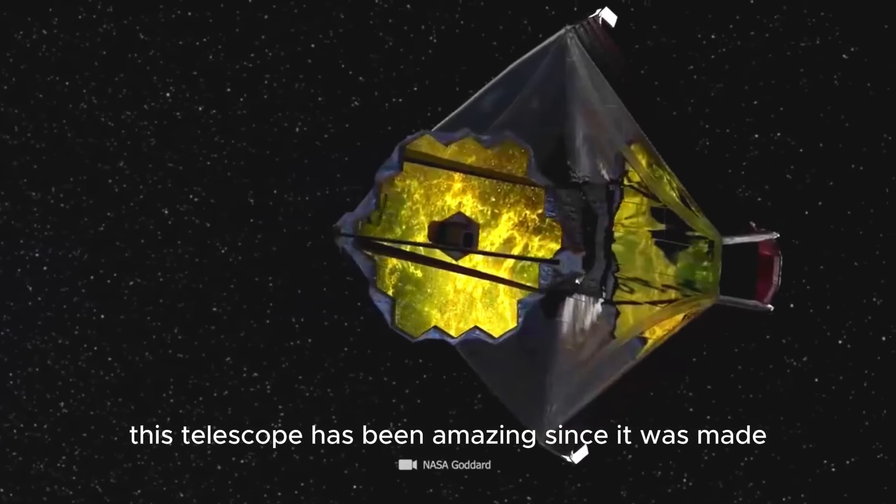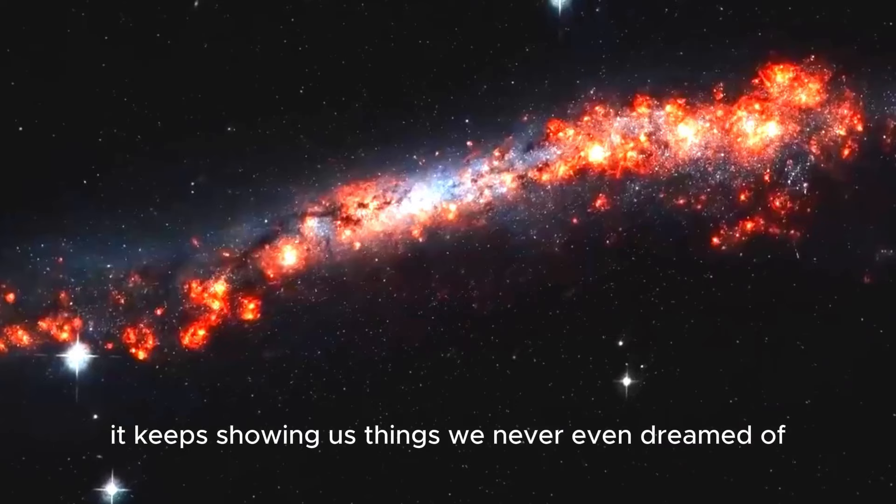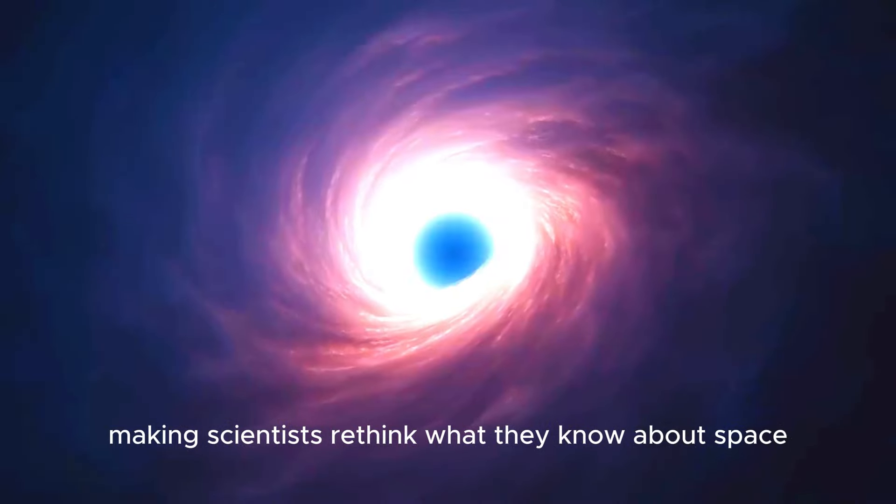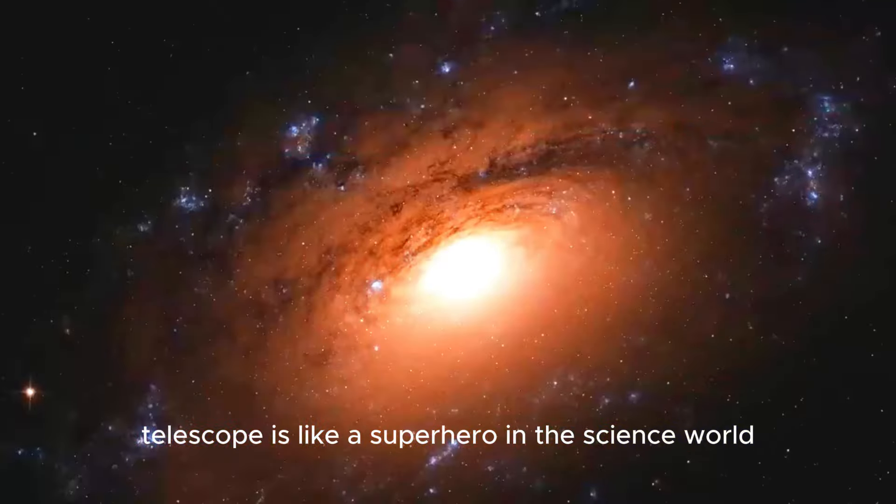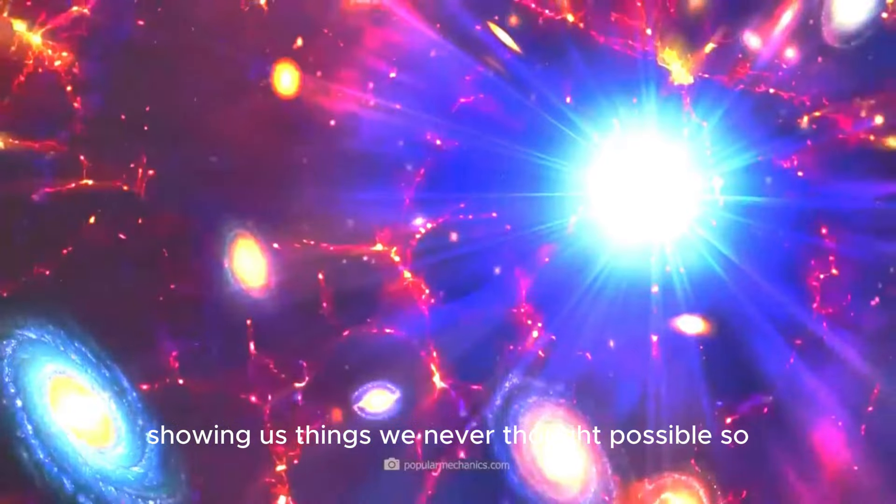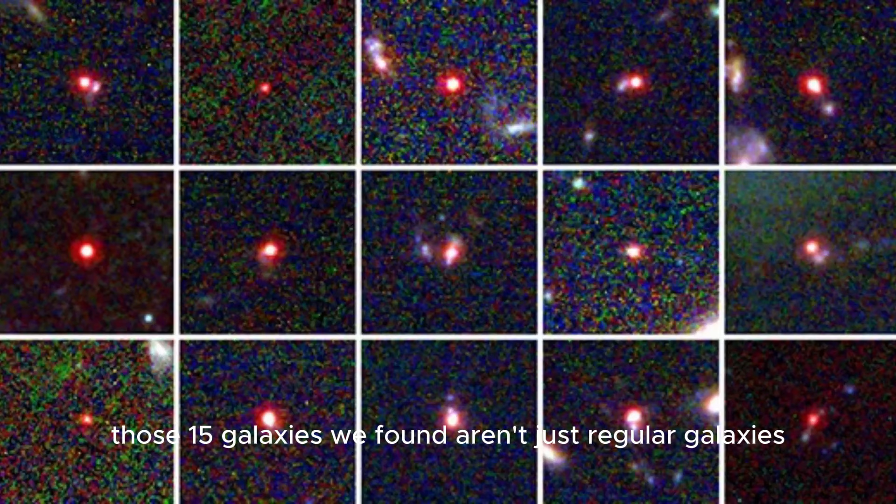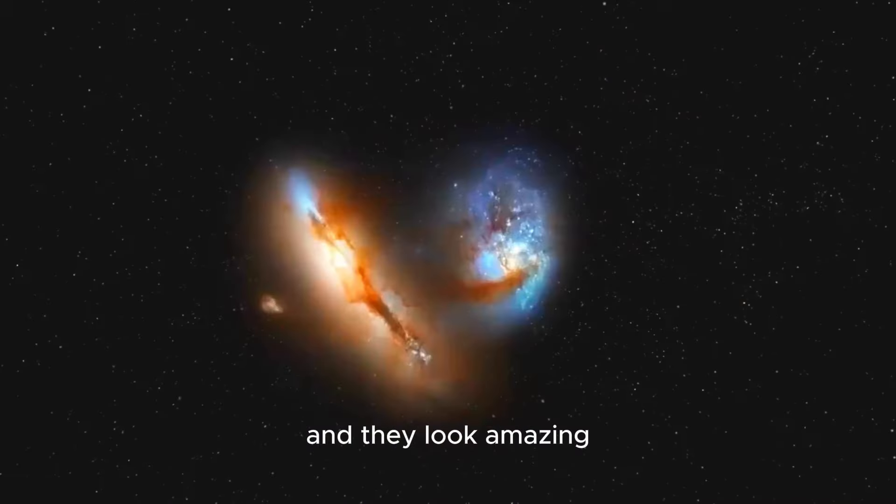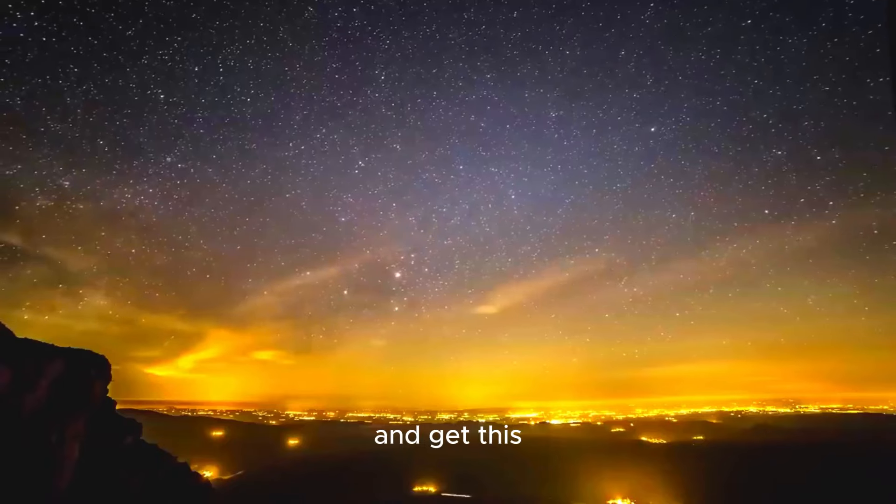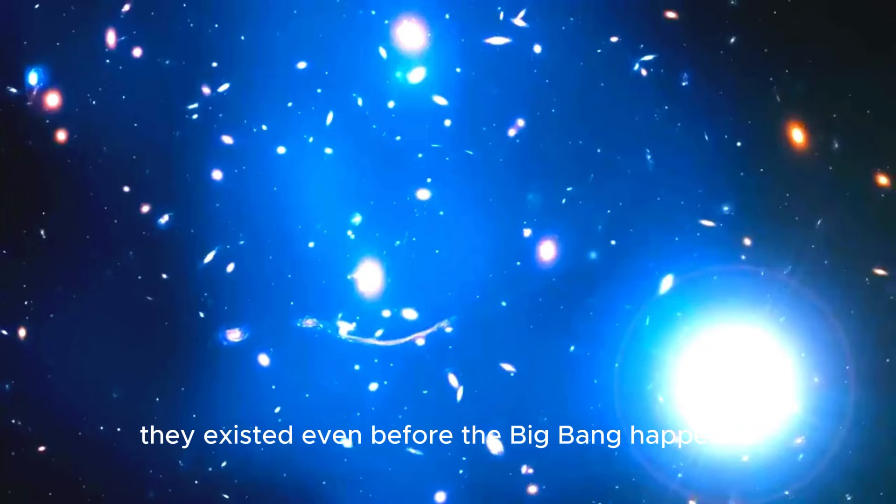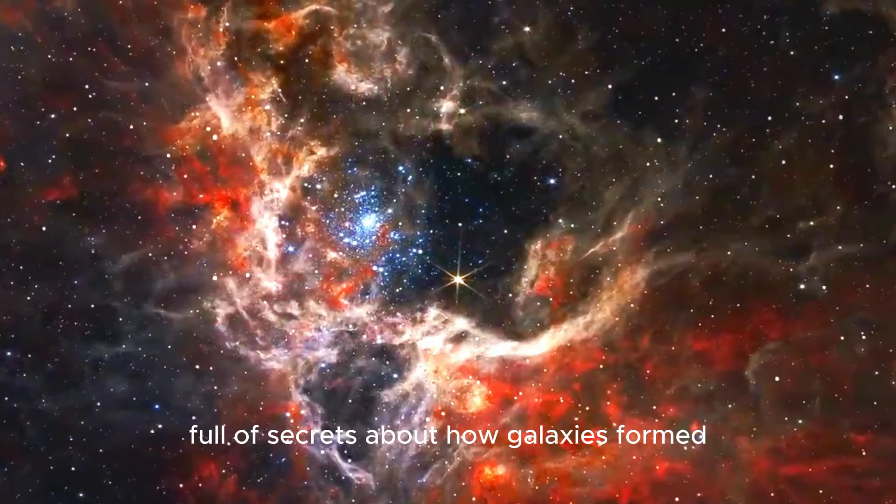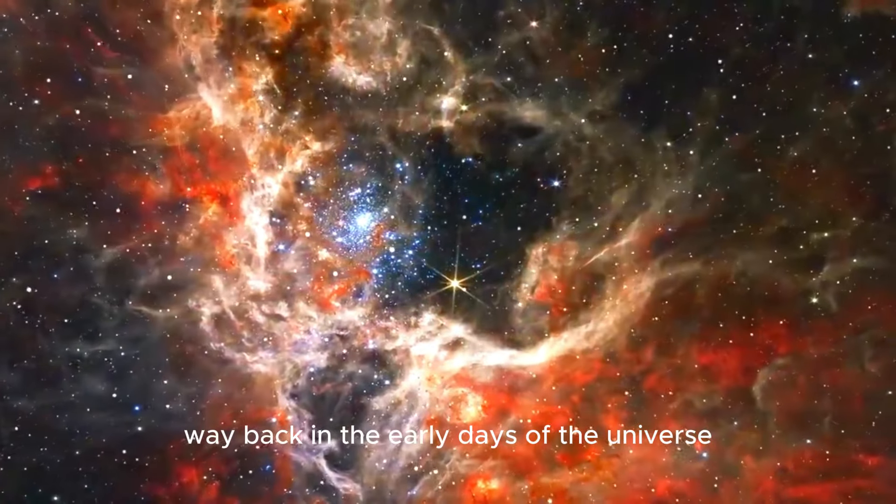However, this telescope has been amazing since it was made. It keeps showing us things we never even dreamed of, making scientists rethink what they know about space. The James Webb Telescope is like a superhero in the science world. So those 15 galaxies we found aren't just regular galaxies. They're super special because they're really far away and they look amazing. They existed even before the Big Bang happened, like finding a treasure chest full of secrets about how galaxies formed way back in the early days of the universe.